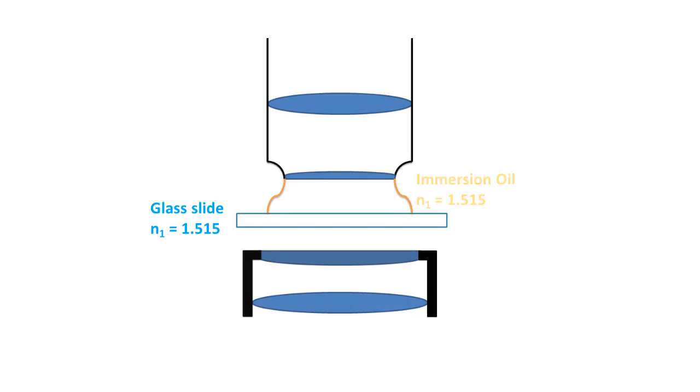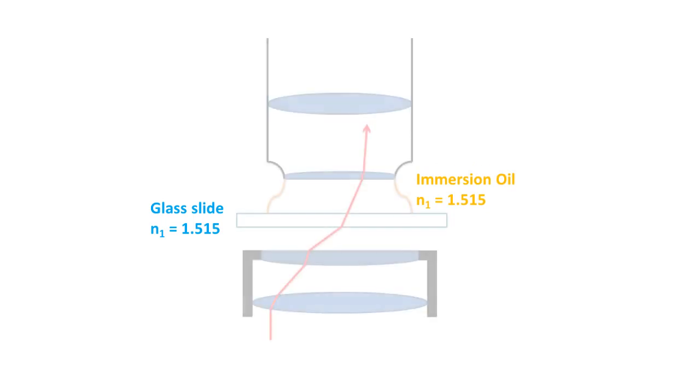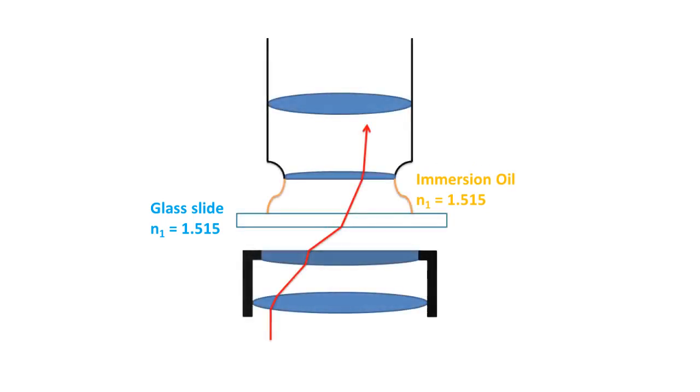By placing a few drops of immersion oil with a refractive index equal to that of the glass specimen slide in this airspace, more light will be directed through the objective, thus producing a clearer image.